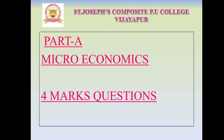First, we will discuss the 4 marks questions from Part A section. As you know that in your second POC there are two sections: Part A Microeconomics and Part B Macroeconomics. Each section will contain its own importance and weightage of marks. Now let me discuss the important 4 marks questions and how to write answers for those questions, elaborately discussed in this session.